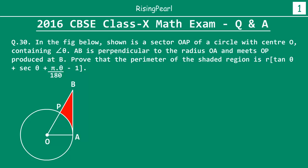So question number 30 goes like this. In the figure shown below is a sector OAP — a sector of a circle with center O containing angle theta. This angle of the sector OAP is theta. Now AB is perpendicular to radius OA, and we draw line AB which is perpendicular — this is 90 degrees.